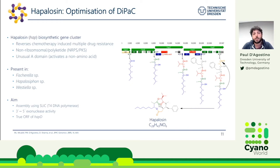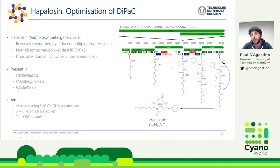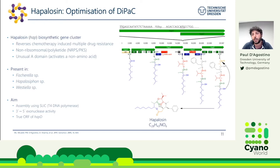The cluster is present in multiple cyanobacteria such as Fischerella and Hapalosiphon, and the nucleotide sequence is almost identical across all these strains. However, looking at gene annotations — particularly in HapD — the open reading frames are annotated differently. In Fischerella the start codon is a TTG, while about 160 base pairs downstream another organism predicts the open reading frame starting at a shorter ATG. DiPaC was a good opportunity to investigate what the real start position might be.